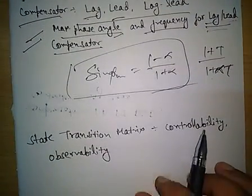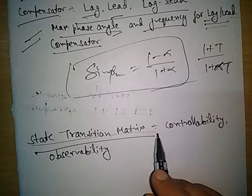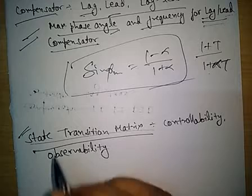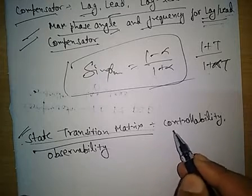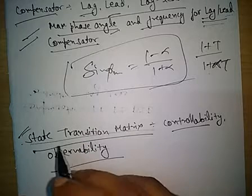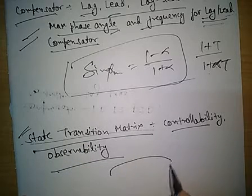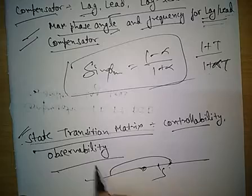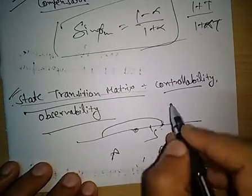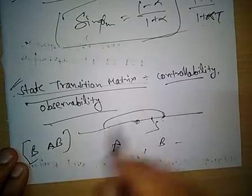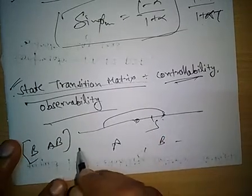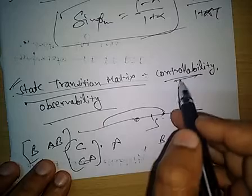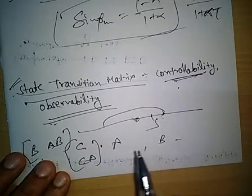Another important topic is the State Transition Matrix — a question has been asked from this topic every year, so we must prepare it with great attention. Controllability and observability are also asked after determining the state space matrices. A signal flow graph may be given from which we form the A and B matrices, then check controllability using the matrix [B, AB] and observability using the matrix [C; CA], to decide whether the system is controllable and observable.